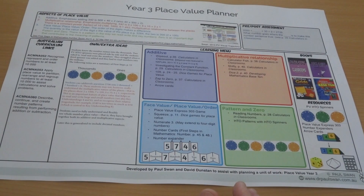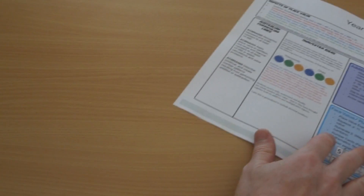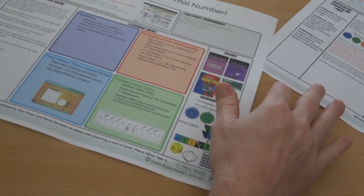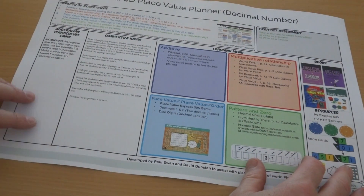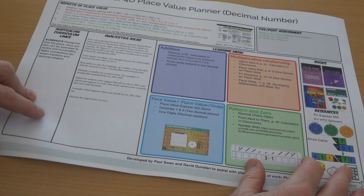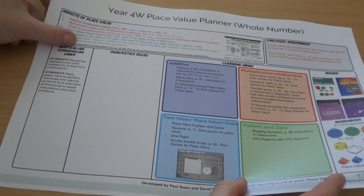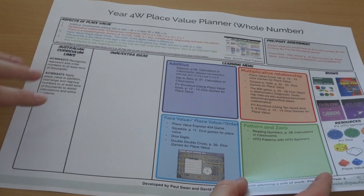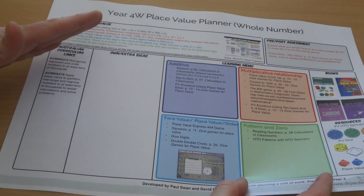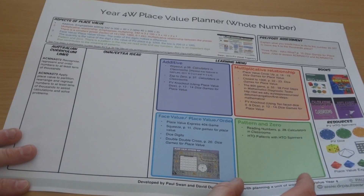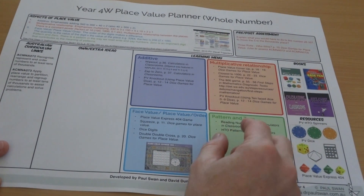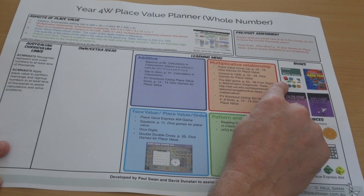These planners go from Year 1 to Year 6 and are designed to help with that. For example, the Year 4 planner has a 4D for decimals and a 4W for whole numbers, so in Year 4 you'd cover both whole numbers and decimals. To support some of this, we've made some videos and produced a book called Playing with Place Value.